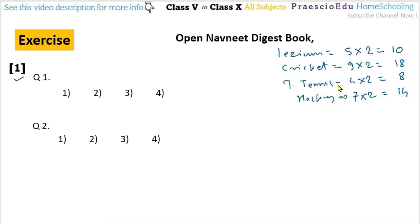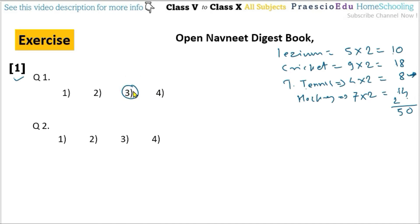Total students: 10+18+8+14 = 50 students. Question 1: which game is played by the least number of children? The least is 8 — table tennis — option number 3. Question 2: how many less children played lesim than cricket? Lesim is 10 and cricket is 18, so 8 students less — option number 1.